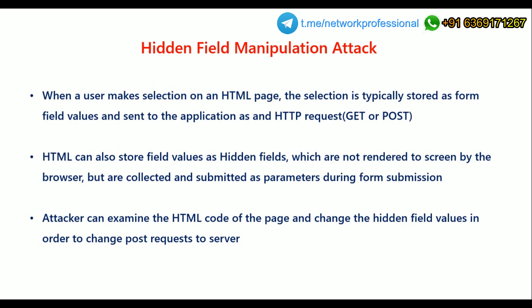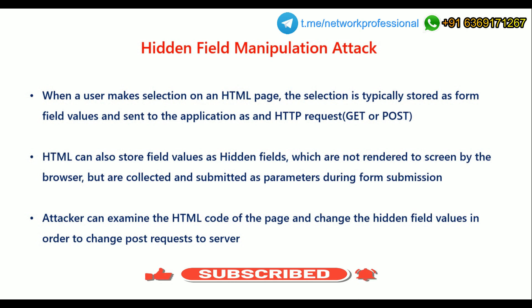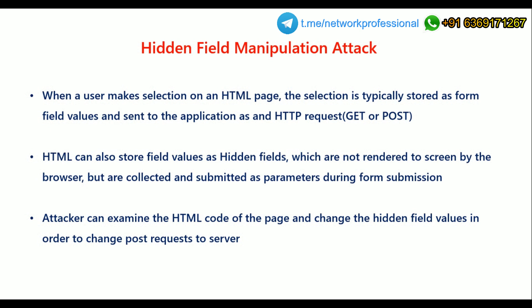When a user makes a selection on an HTML page, the selection is typically stored as form field values and sent to the application as an HTTP request using a GET or POST method. HTML can also store field values as hidden fields, which are not rendered to the screen by the browser but are collected and submitted as a parameter during form submission. The attacker can examine the HTML code of the page and change the hidden field values in order to change the POST request to the server.